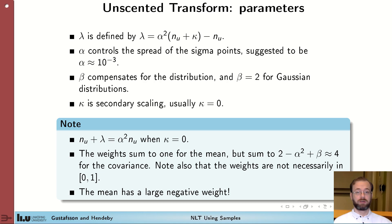Alpha, which is the first spread parameter, is suggested to be quite small, which makes the sigma points appear close to the center of the distribution. Beta compensates for the kind of distribution involved. It has been shown that beta equals 2 is optimal for Gaussian distributions, and most people use beta equals 2 all the time. Kappa is a secondary scaling. It's usually set to zero.